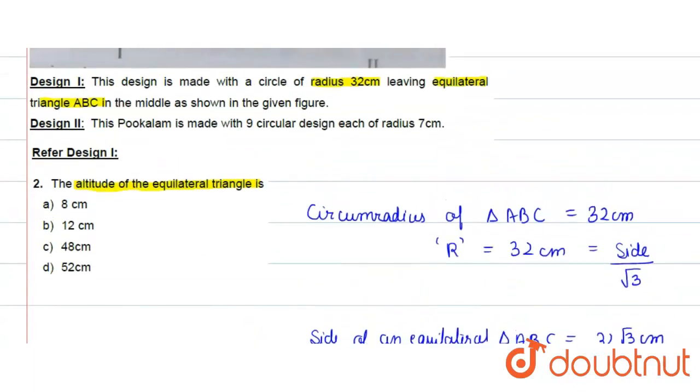So, here we have the altitude of 48 cm, which is option C, which is the correct answer. Thank you.